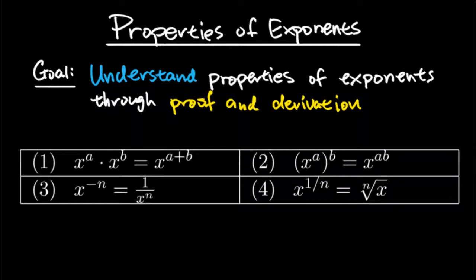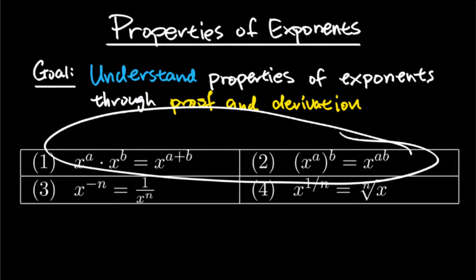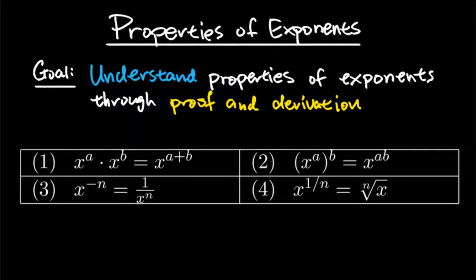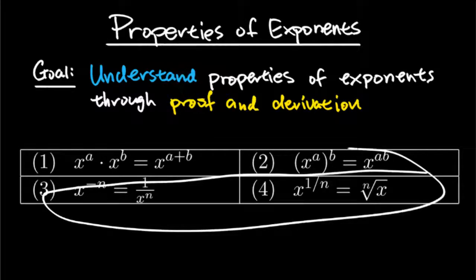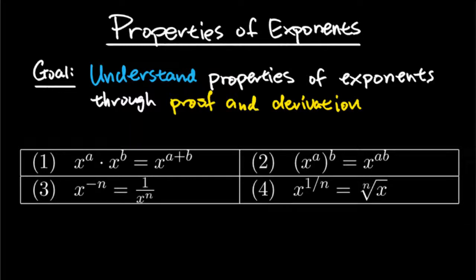Hello class, in this video we're going to be talking about properties of exponents. If you're from my class looking for the homework video, this is it — you're in the right place. We're going to look at four properties. For the first two I want to go through proofs so you don't confuse what's multiplied and what's not, because both of them might lead you to think multiplication. And negative exponents doesn't mean you're going to get something negative — we'll see why later.